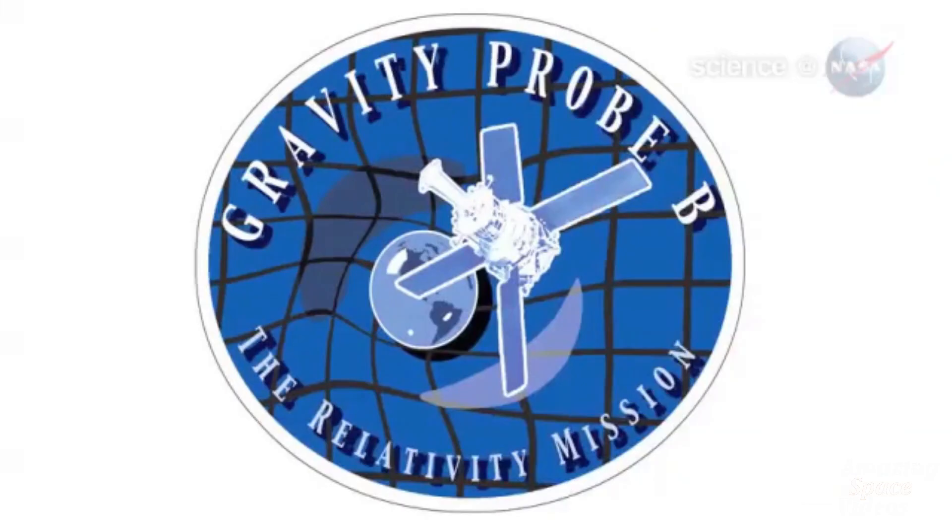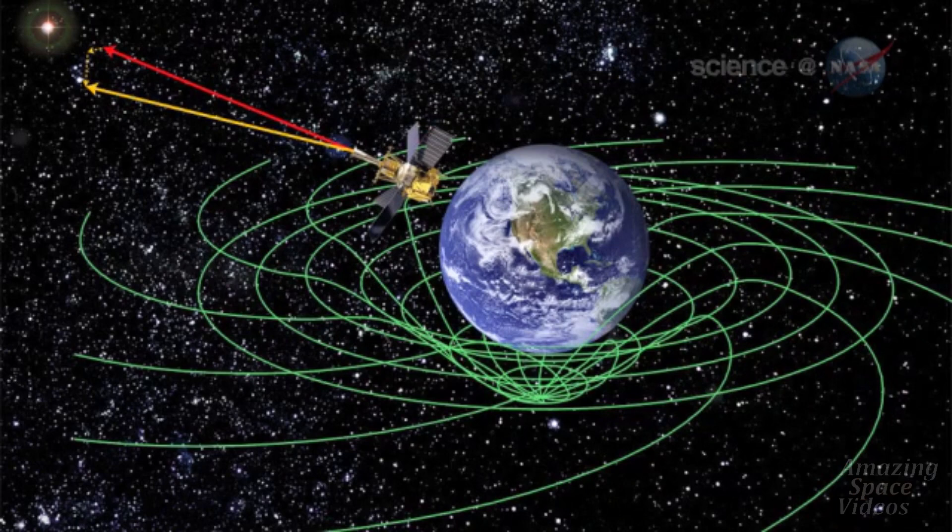Einstein predicted this almost 100 years ago, and it turns out to be true. On May 4, 2011, researchers announced that NASA's Gravity Probe B spacecraft has detected the vortex, and its shape precisely matches the predictions of Einstein's theory of gravity.